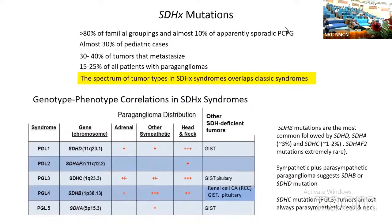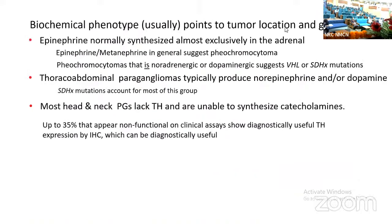We have to be aware of these syndromic overlaps and also of distinctive characteristics of syndromically associated tumors occurring in patients with SDH mutations, so that we can call attention to the possibility of syndromic disease. Starting with pheochromocytomas and paragangliomas, the biochemical phenotype of the tumor usually points to tumor location and to genotype. Epinephrine or adrenaline is normally synthesized almost exclusively in the adrenal, so the presence of epinephrine or metanephrine in general suggests pheochromocytoma.